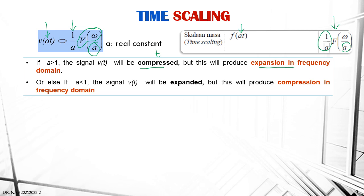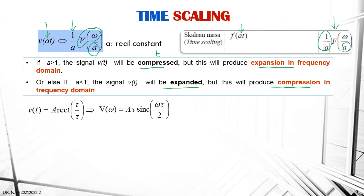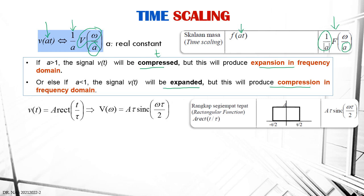If the scaling factor 'a' is less than 1 in time domain, the signal will be expanded in time domain but compressed in frequency domain. Let's look at the first example: if you have v(t) equal to A times rectangular(t over tau), refer to the table — the Fourier transform of a rectangular signal equals A*tau times sinc(omega*tau over 2).